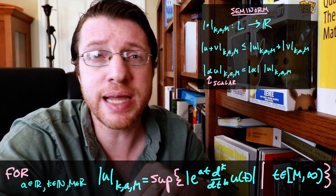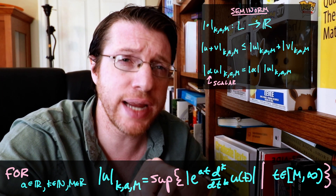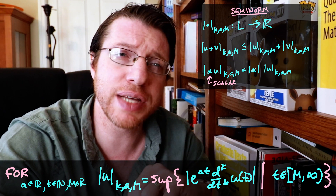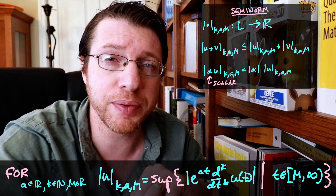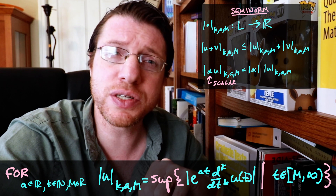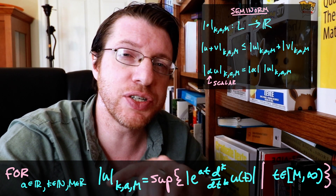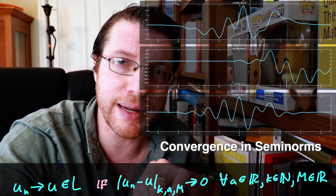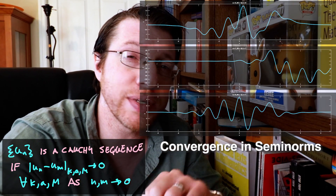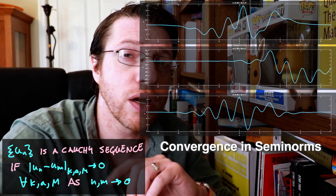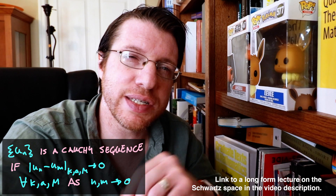These semi-norms are defined where we take m to be any number in R. Note that they satisfy a triangle inequality, and you can pull scalars out at the cost of an absolute value. We say that a sequence of functions in L converges to another function mu in L if the difference under each semi-norm goes to zero as n goes to infinity. Conversely, we have a Cauchy sequence if the difference between two elements of the sequence goes to zero under each semi-norm as n and m go to infinity. In fact, L is complete, and you can see that each Cauchy sequence is a convergent sequence, in the same way that is done for the Schwartz space.